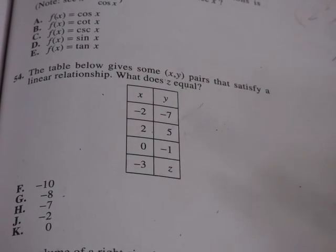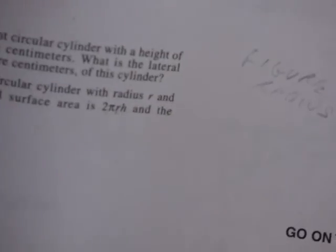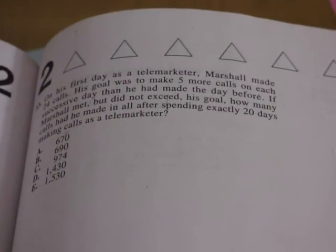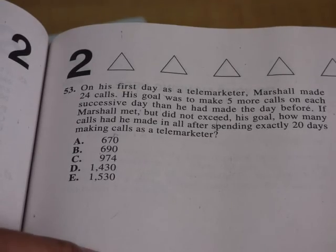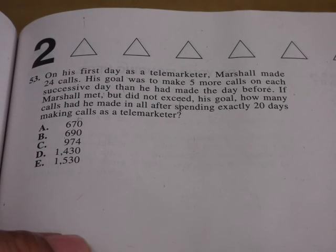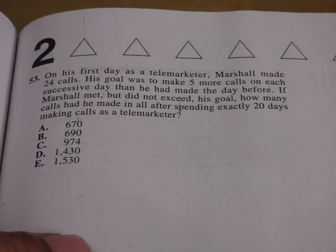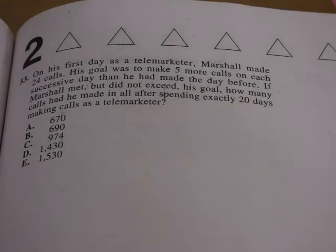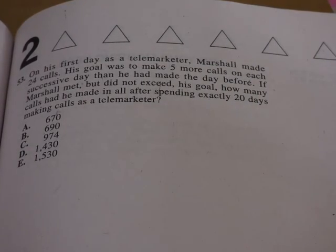So that's that. Let me see. I have one more. Let's see if I can squeeze in one more problem. Not sure if I can get this one in time. It's right here. Let me move up a little bit and get it flat here. This is a number 53 from one of the exams. And it says, on his first day as a telemarketer, Marshall made 24 calls. His goal was to make five more calls on each successive day than he had made the day before. If Marshall met but did not exceed his goal, how many calls had he made in all after spending exactly 20 days making calls as a telemarketer? Now, there's a lot of stuff going on here. But essentially what they're doing is they're saying he started.